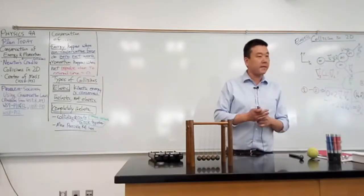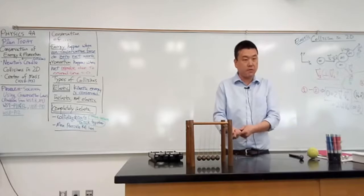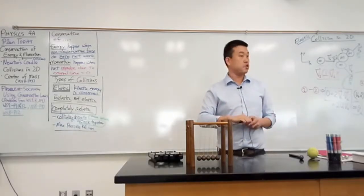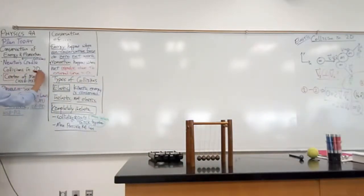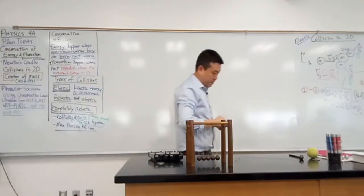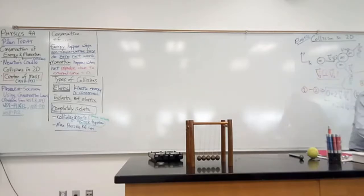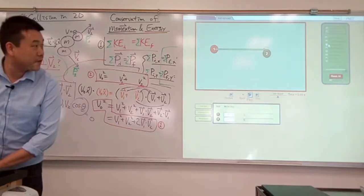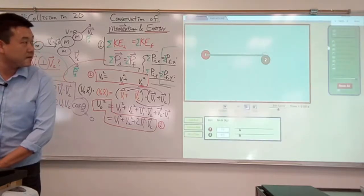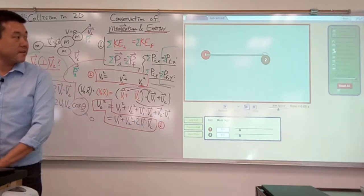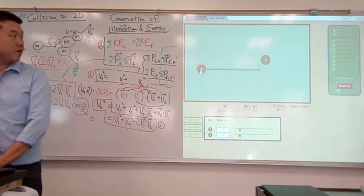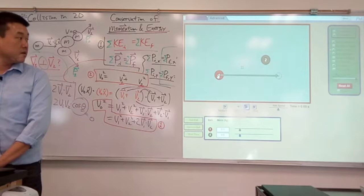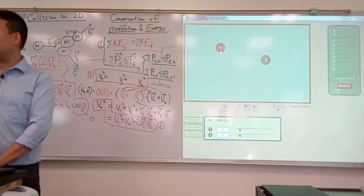I want to introduce and talk about this today because it's an important concept that we do need to talk about, and it's sometimes useful in problem solving — not in all problems — but it's this idea of center of mass. Let me illustrate it with this simulation here. There's a little thing called the center of mass, and it puts a dot at the sort of center between the two objects. One way you can describe center of mass is that it's an averaged position.